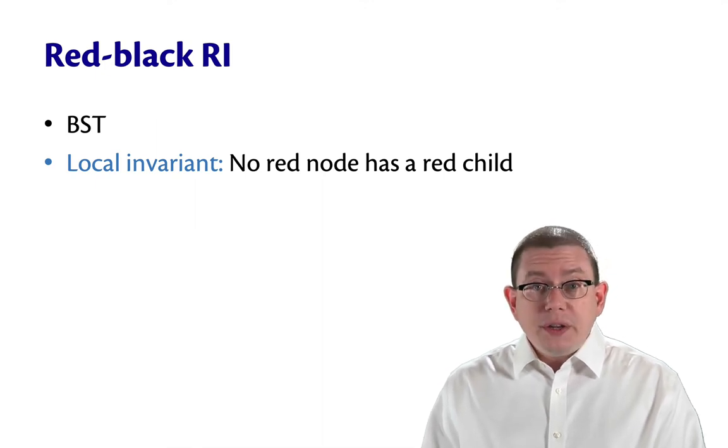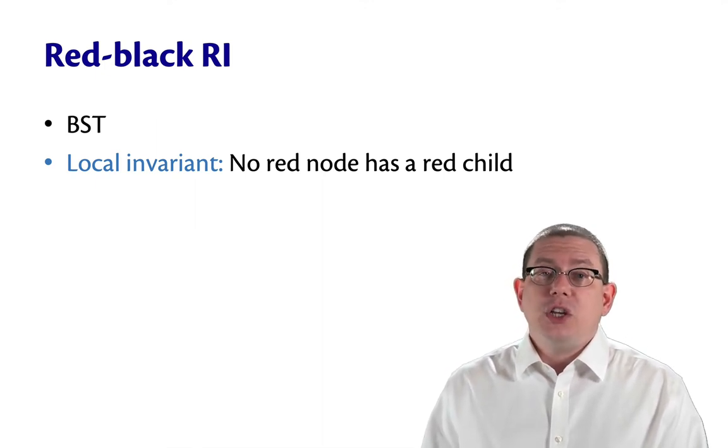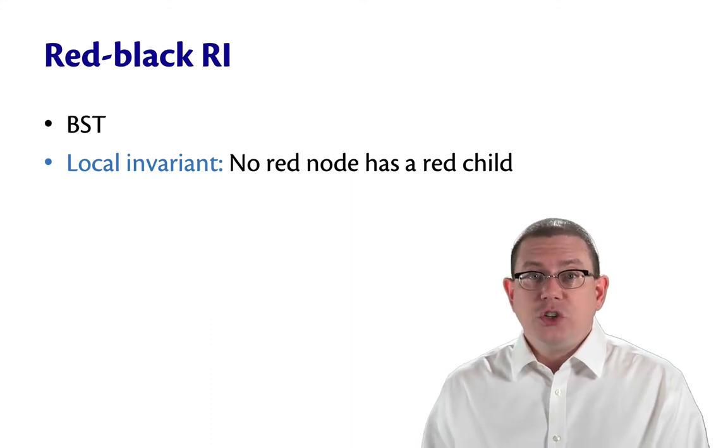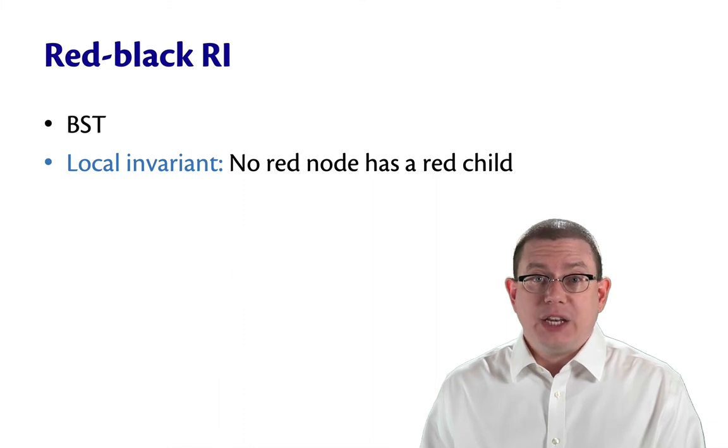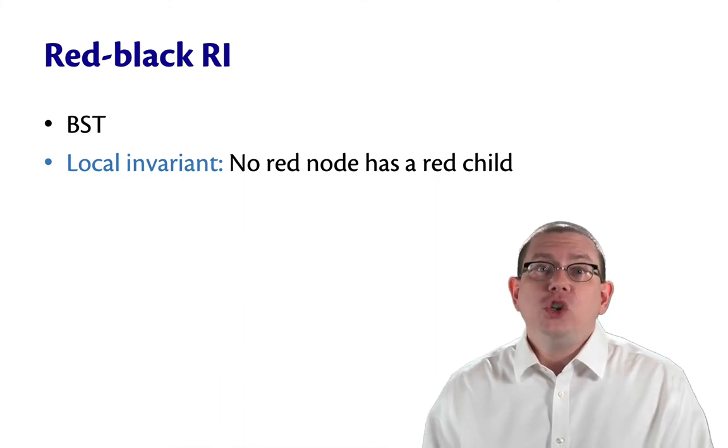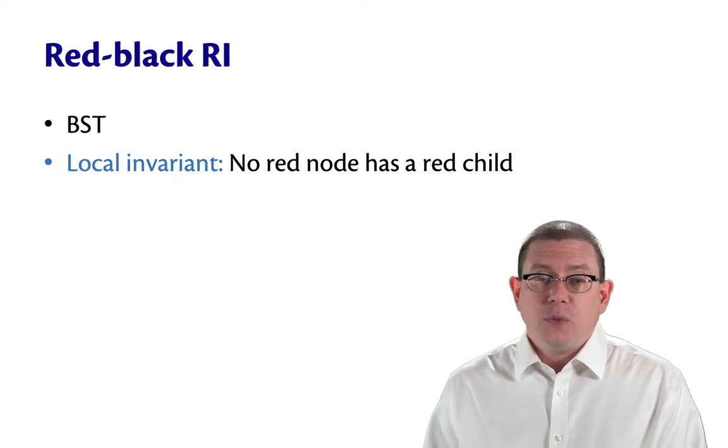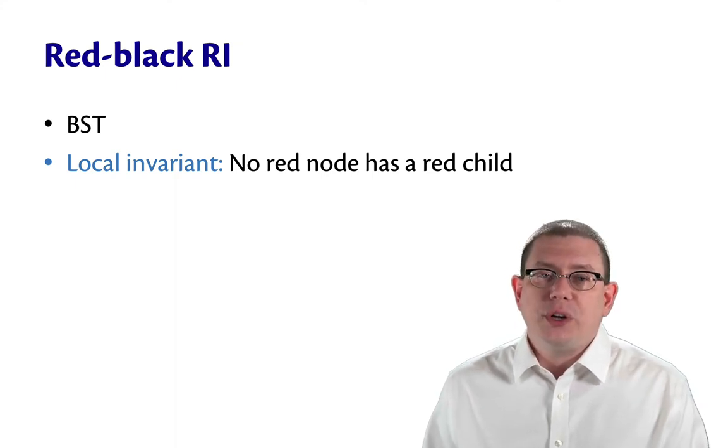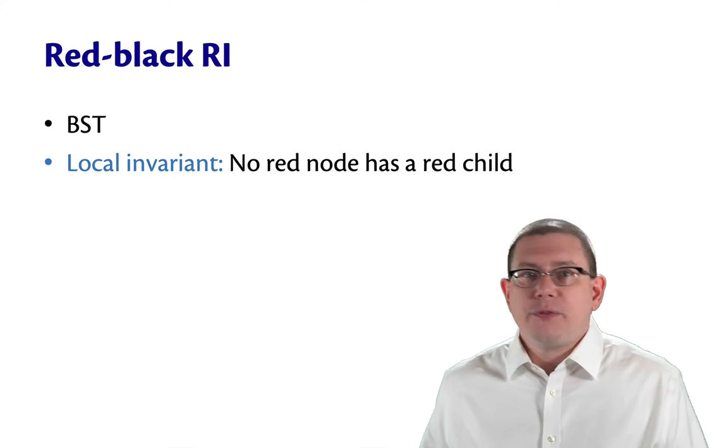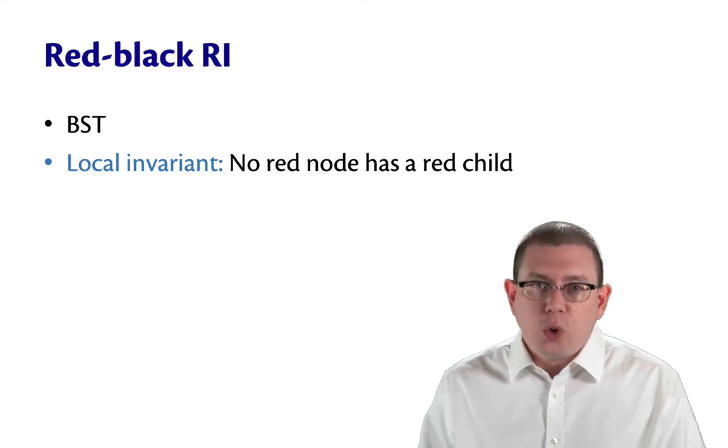The first, I'll call the local invariant. The local invariant for a red-black tree says that no red node has a red child. So, you never get two reds in a row. I call that local because you can check it locally at each node. Look at a node and then just look at its children. Of course, you'd have to do that for all the nodes, but it's still something you can check locally at the node.